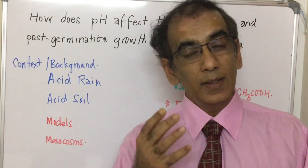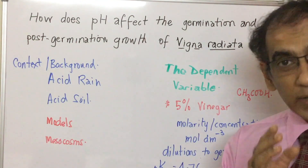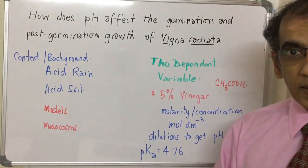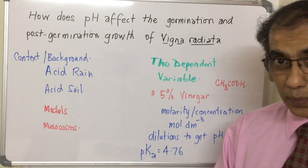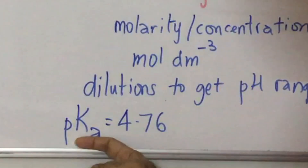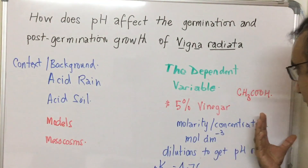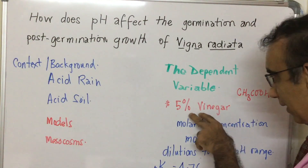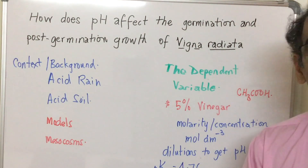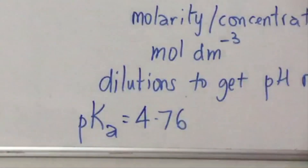Vinegar — ethanoic acid — is a weak acid. If we have a 5% concentration and you know its density (1.05 g/cm³), you can work out the actual molarity of a 5% vinegar solution. If vinegar has a pH of 2.5 at 5% concentration, and the chemistry data booklet gives acetic acid a pKa of 4.76, then you can determine Ka and plug that into the expression for the dissociation of this weak acid. You can then solve for the H⁺ ion concentration or the pH.